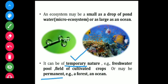A temporary ecosystem exists for a while or a short period of time. For example, a field of cultivated crops: for a particular time you take care of that area by providing fertilizer, insecticides, pesticides, and proper irrigation, but after harvesting you end that maintenance. It's not permanent like forests and oceans, that's why it's called temporary.